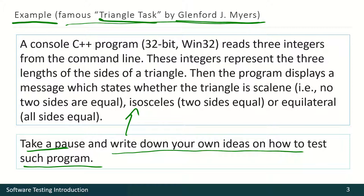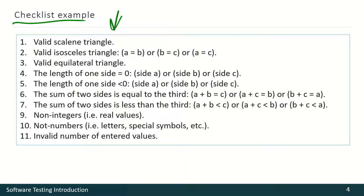This is the answer from Glenford Myers. This is a checklist. As you see, the first three points test the main idea of this software. These three points test if this software really detects those three types of triangles. In this particular case, we have to check all three combinations.